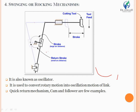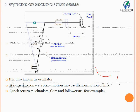In a shaper machine, a very fast return stroke is required since no machining operation is needed during the return stroke, so idle time should be minimized. Therefore, the cutting stroke is slow and the return stroke is fast — this is achieved by using the swinging or rocking mechanism. A similar mechanism can also be found in cam and follower systems and other machinery.